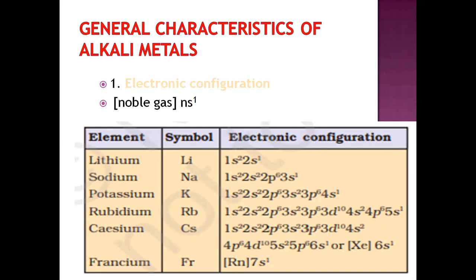The general electronic configuration of alkali metals is ns¹, where n is the number of the participating shell. For hydrogen it is 1s¹. For lithium the second shell participates, giving 2s¹. For sodium the third shell participates, for potassium the fourth, rubidium the fifth, cesium 6s¹, and francium 7s¹. As we go down the group, the number of shells increases from 2 through 7.